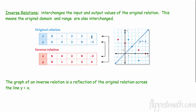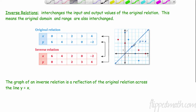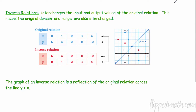Here's our original function: (0,6), (1,4), (2,2), (3,0), (4,2) — plotted in blue. For the inverse, we just flip them: 0,6 becomes 6,0; 1,4 becomes 4,1; 2,2 stays the same; 3,0 becomes 0,3 and so forth. On the graph, the inverse relation is a reflection of the original relation across the line y = x — every point is mirrored across that line.